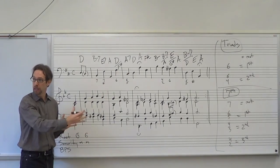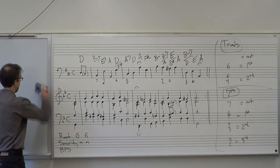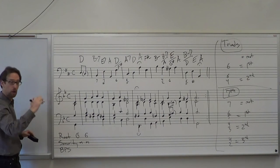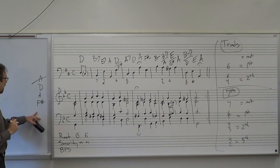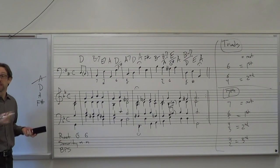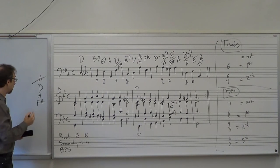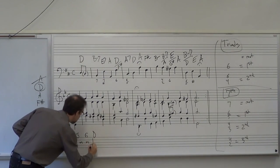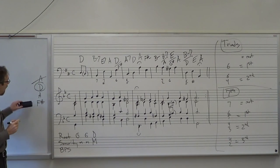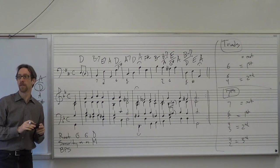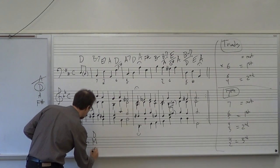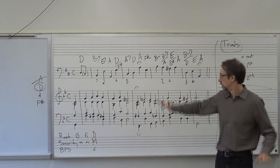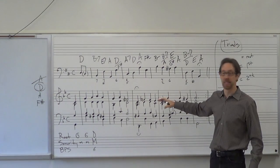For the last one before you continue on your own: bottom to top I have F sharp, A, D, A. The doubling doesn't matter, so I have F sharp, A, D. I need to figure out which one is my root — this one is not in root position. I can stack thirds on D, so D is my root. D, F sharp, A is a major triad — I write a capital D. The F sharp is the lowest note, and it's the third of the chord. When the third is in the bass, it's first inversion, indicated with a 6.